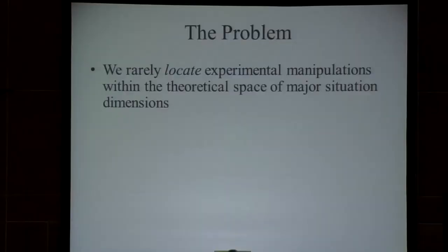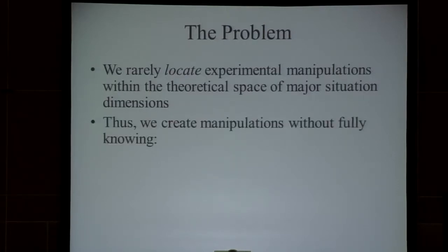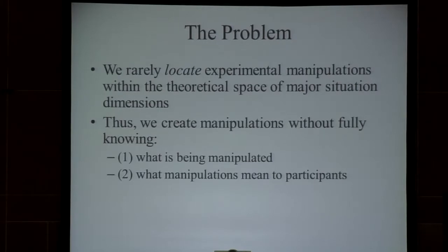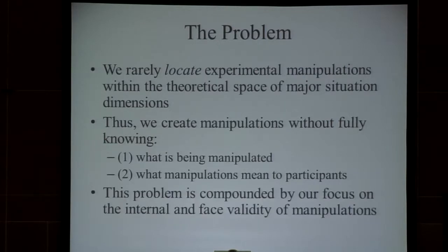The problem, at least in my view, is that we rarely locate experimental manipulations within the theoretical space of major situational dimensions in the given area we're studying. What we do is sometimes unwittingly create manipulations without knowing exactly what's being manipulated and what the manipulations mean to different kinds of people — not just people in general in a generic kind of response, but to different kinds of people with different kinds of developmental histories, different personalities, different needs and motives. This problem becomes really compounded by our focus on both the internal and face validity of our manipulations.